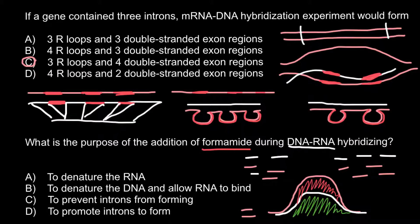The correct answer is answer B: formamide denatures the DNA and allows RNA to bind to the DNA at more optimal temperatures. That is all for today — thank you for your attention. Please subscribe for my new videos, which I post almost every day. Thumbs up if you like this video, and please write your comments and questions if you have any. See you in the next video, goodbye.